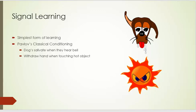Signal learning is the simplest form of learning and is similar to Pavlov's classical conditioning. Dogs salivate when they hear a bell, and we withdraw hand when touching a hot object. These are both examples of signal learning.